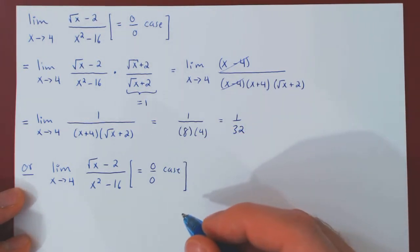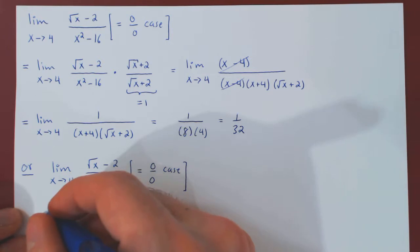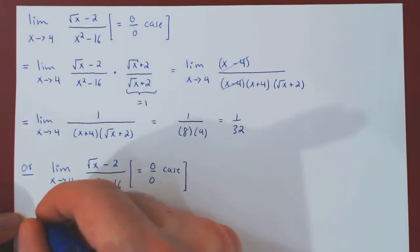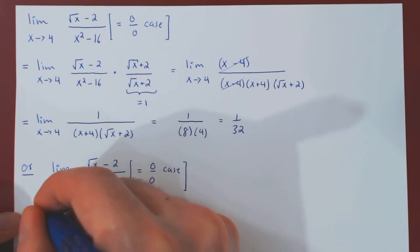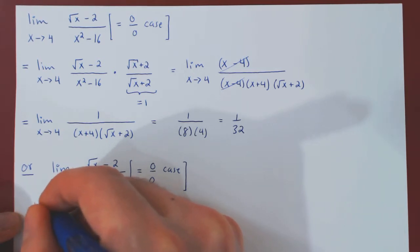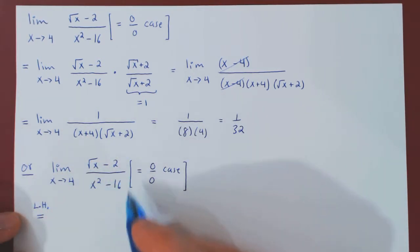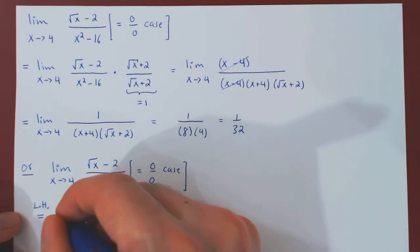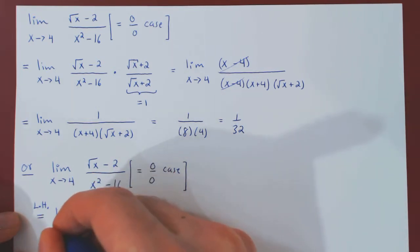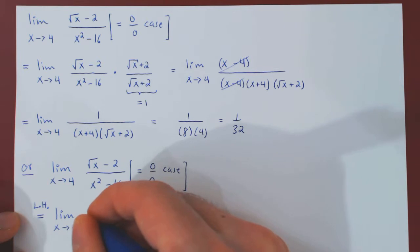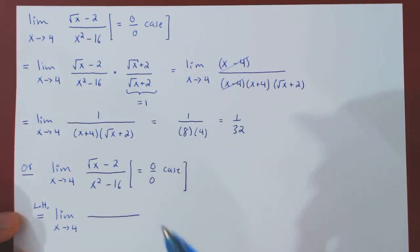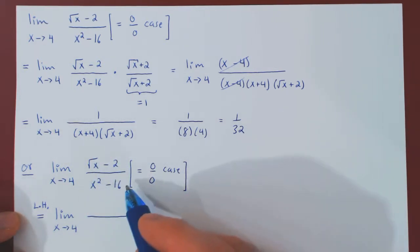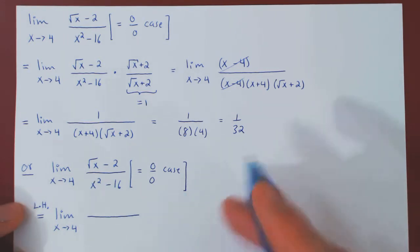Every time we use L'Hôpital's rule, we want to write above the equal sign 'L'H' to be very explicit that we are going from the original to the new limit using L'Hôpital's rule. The limit always stays the same, so x is still approaching 4. We will replace both the numerator and the denominator by their respective derivatives.